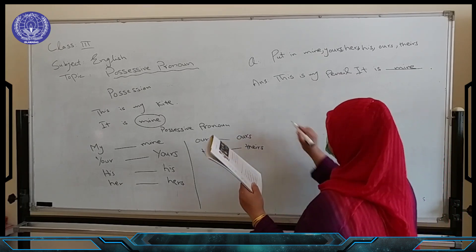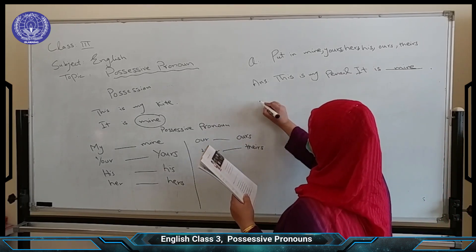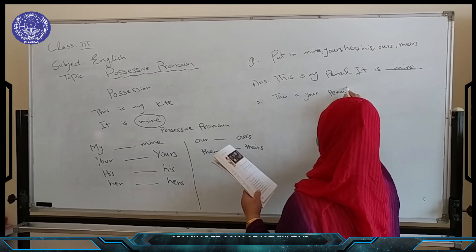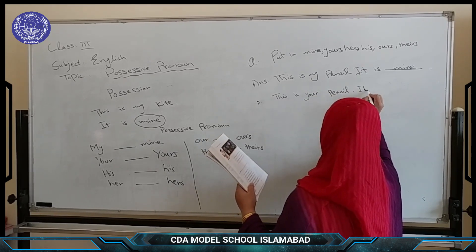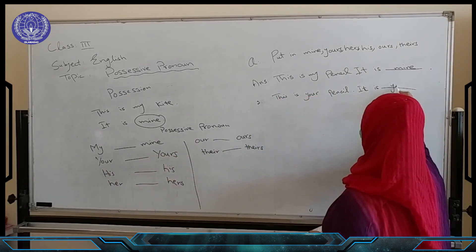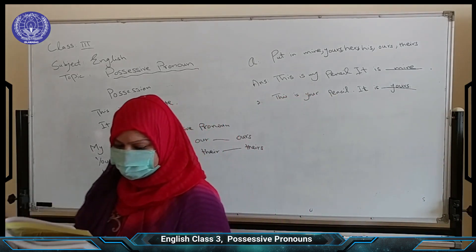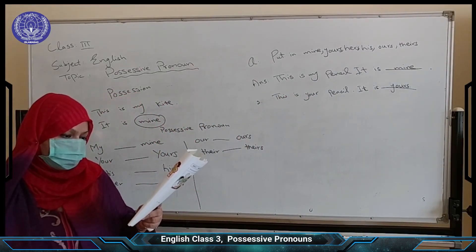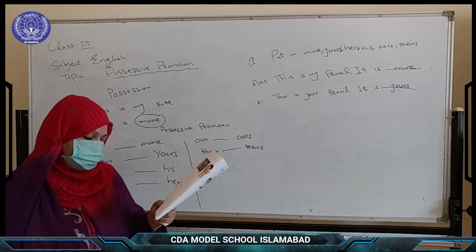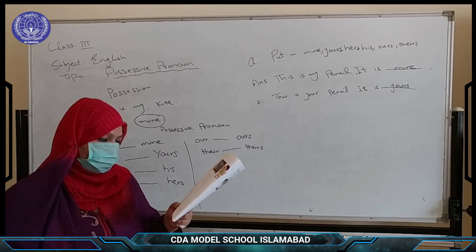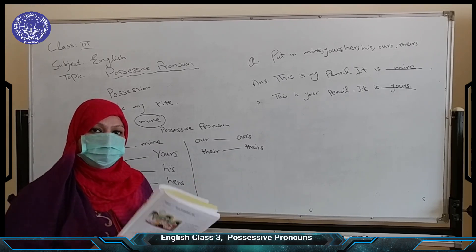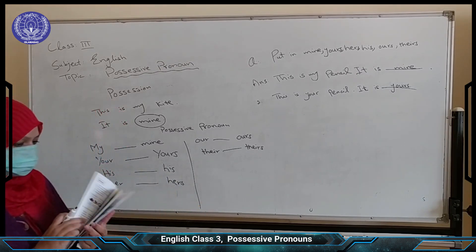Second example is: this is your pencil. It is dash. I have told you that the possessive pronoun of 'your' is 'yours' — it is yours. In this way, you have to complete this exercise on page number 10. These are our rulers — they are ours. Those are his shoes — they are his. Those are her shoes — they are hers. This is our playground — it is ours. This is the boys' playground — it is theirs. You have to complete this exercise on page number 10 on your copies, and I will check it. You have to write down five examples on your copies.